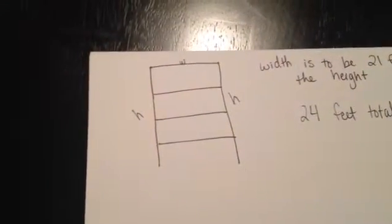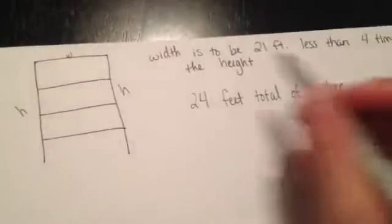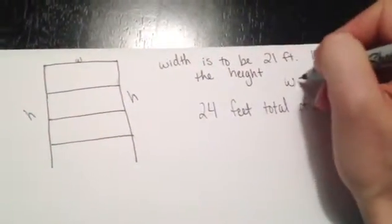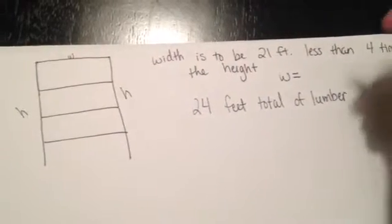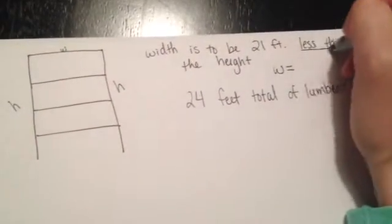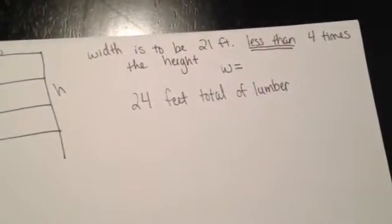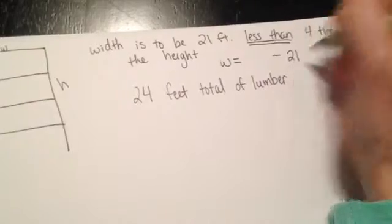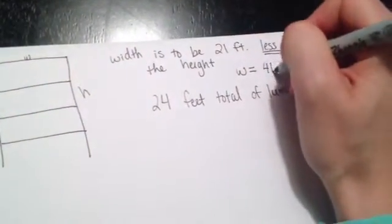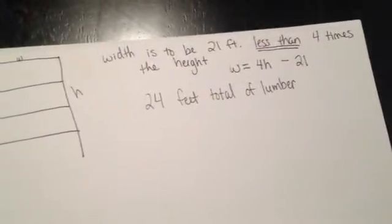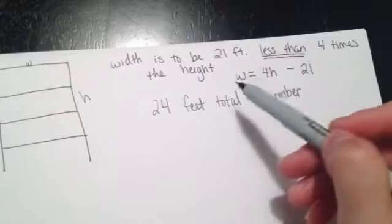Right away I know that this is going to be my width and then I'm going to have two heights. I don't know what those numbers are yet. However, I can translate this: the width — remember 'is' means equals — to be 21 feet less than. When I see 'less than,' I know it's going to switch, so I put the 21 feet at the end. So: four times the height minus 21. That's translated. So instead of writing W's, I'm going to write 4H minus 21.